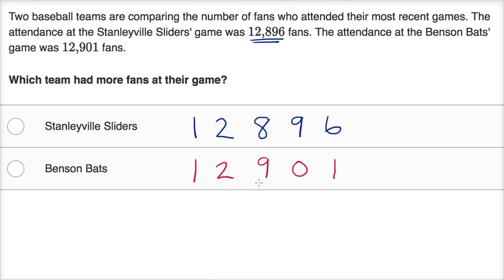It doesn't matter what happens in the tens and ones place if they have more hundreds over here. So Benson Bats — this is a larger number. Which one has more fans at their game? Benson's Bats. I start at the largest place value, the 10,000s place — it was the same. Then I move on to the next place — the same. Then the next place: in the hundreds place, Benson's Bats is larger. So Benson's Bats has more fans than Stanleyville Sliders. So I could write this as 12,901 is greater than 12,896.